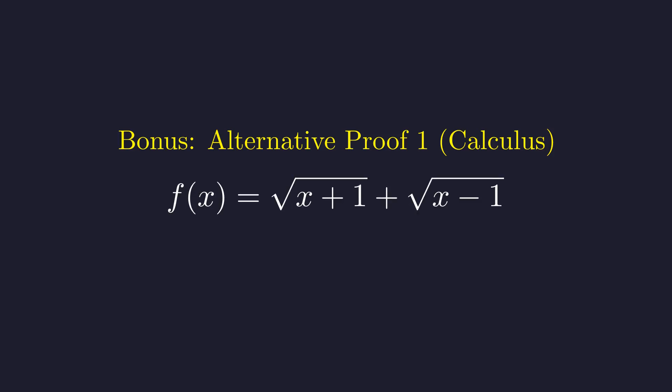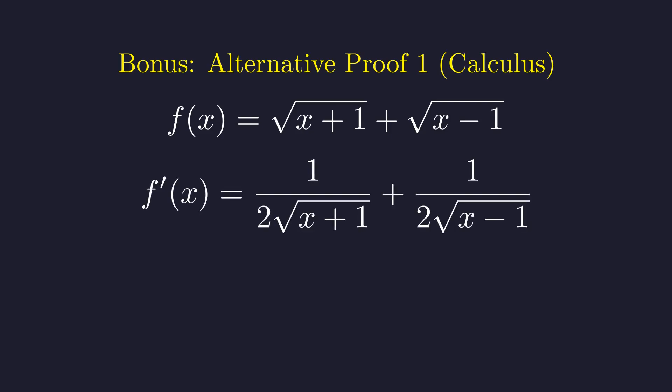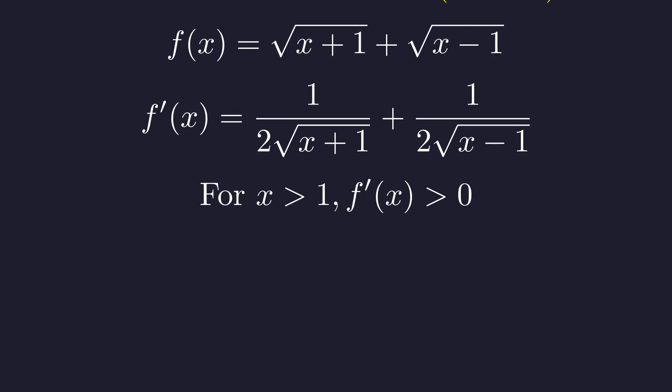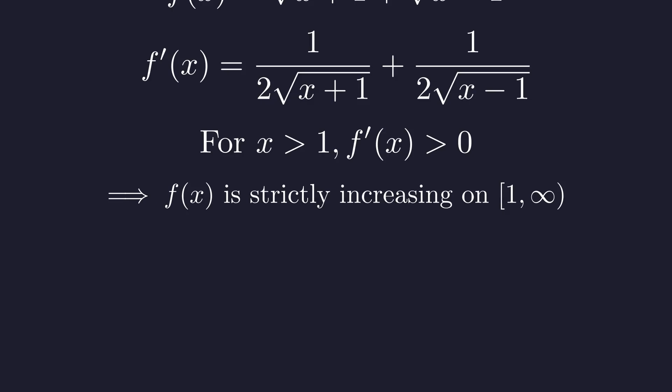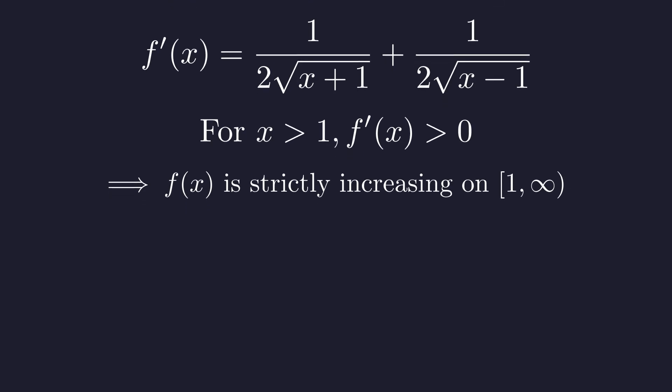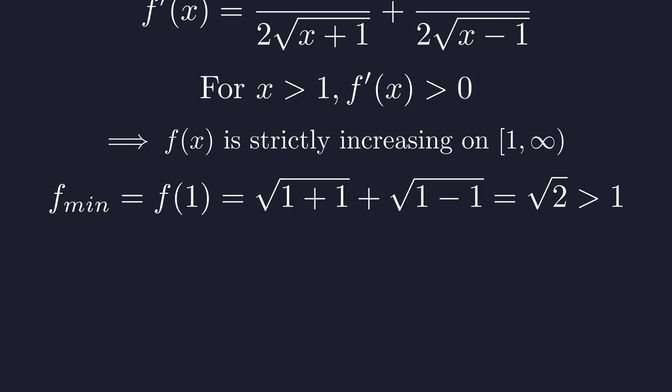If you know some calculus, there's a much more elegant way to see why this equation has no solutions. Let's call the left side f(x). Taking the derivative, we get 1 over 2√(x+1) plus 1 over 2√(x−1), which is only defined for x strictly greater than 1. For any x greater than 1, both terms are clearly positive, so the derivative is always positive. Since our function is continuous at x = 1 and strictly increasing everywhere else in its domain, the minimum value occurs at the left endpoint: √2 + √0 = √2 ≈ 1.414. Since this minimum is already bigger than 1 and the function only goes up from there, it can never equal 1. Case closed.